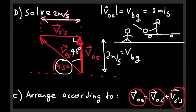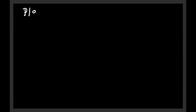So for the observer on the ground, the ball is moving straight up with an initial velocity of 2 meters per second. How high does the ball go? This is a one-dimensional kinematics question which you should be able to solve. Please compute the height and type it into OWL space.